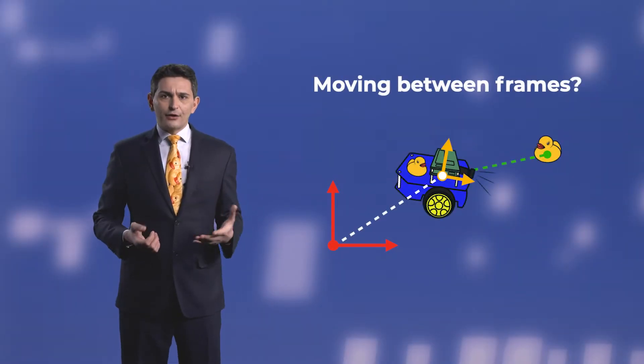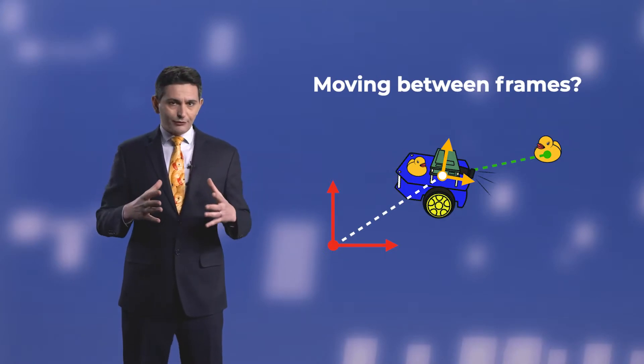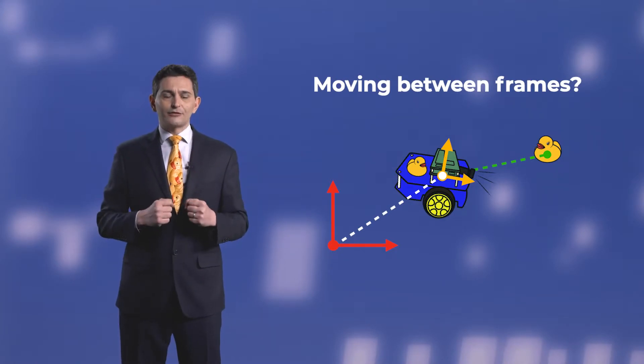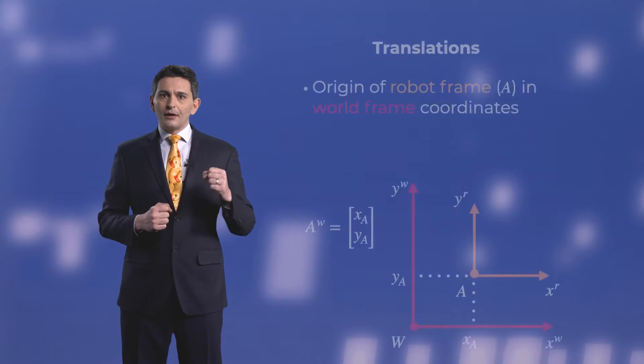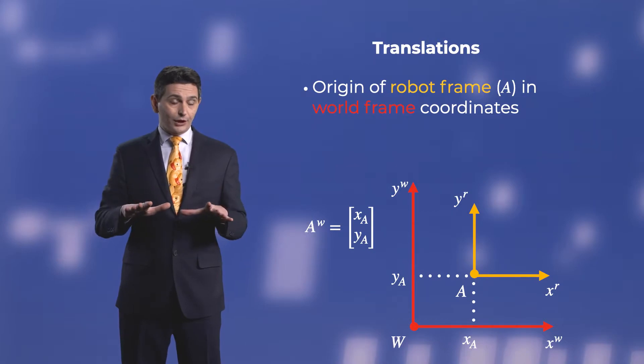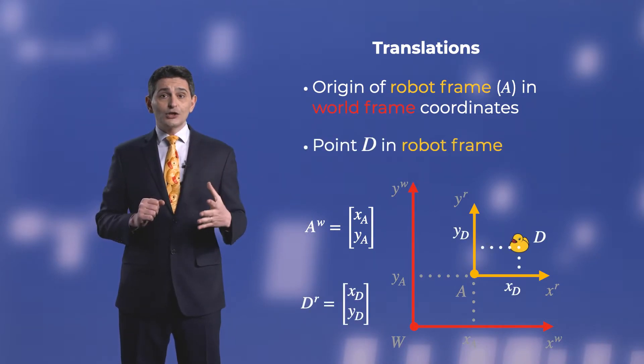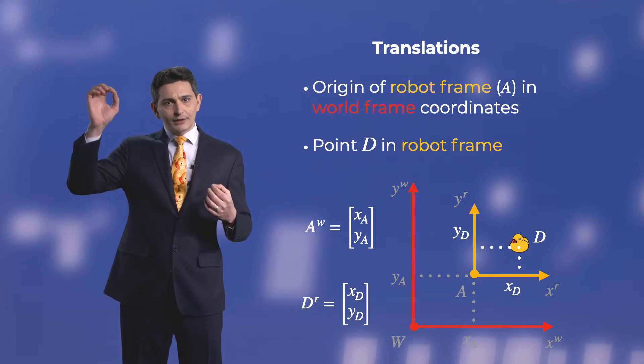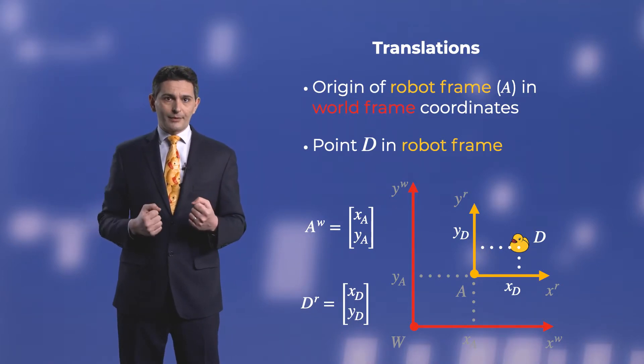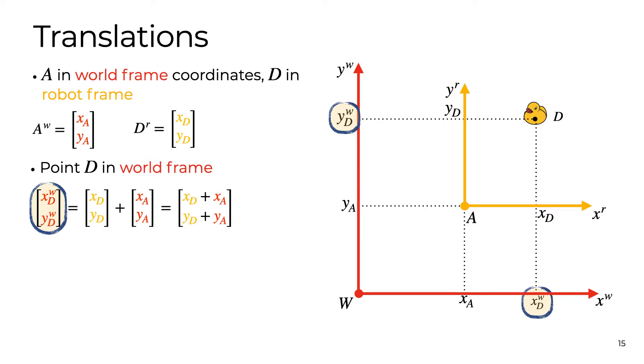So let's look at the math on how to move between frames, starting from the simpler case of translations. Take two reference frames and assume that they are purely translated with respect to each other, by X and Y A. Now consider a point D of coordinates X, Y D in the robot frame. Its coordinates in the world frame will be given by the sum, along each axis, of the coordinates in the robot frame and those of the origin of the robot frame.